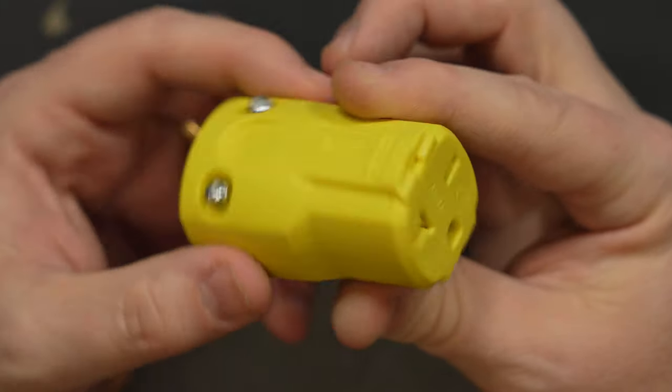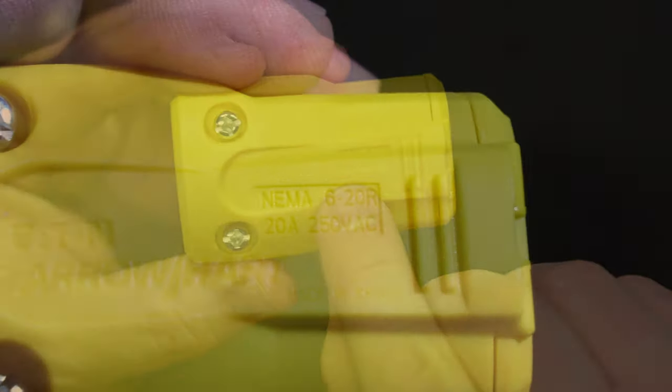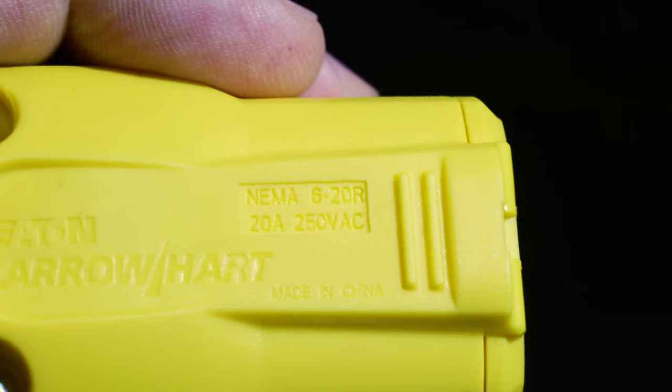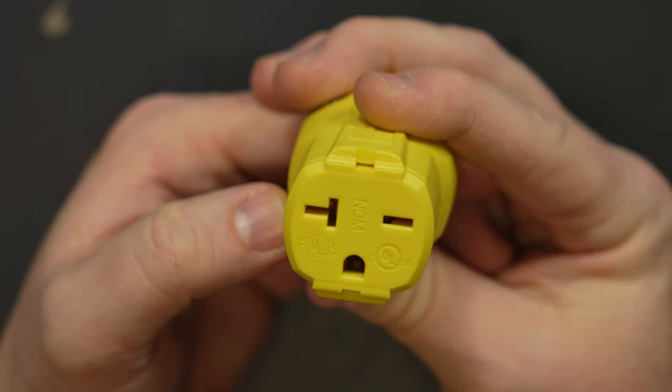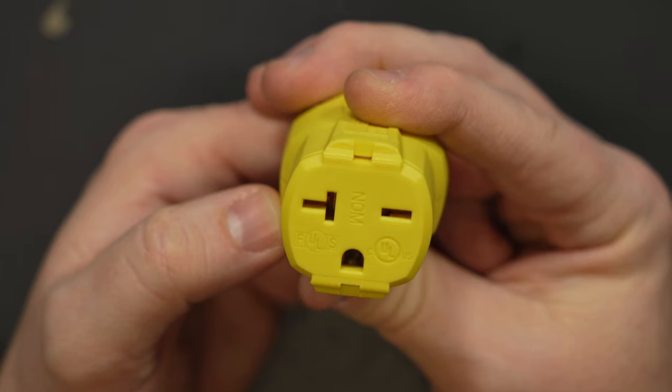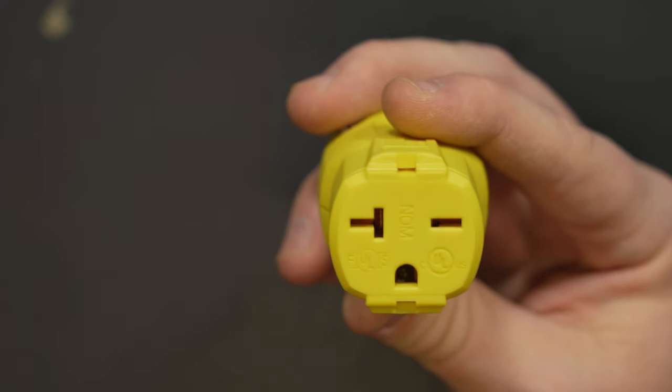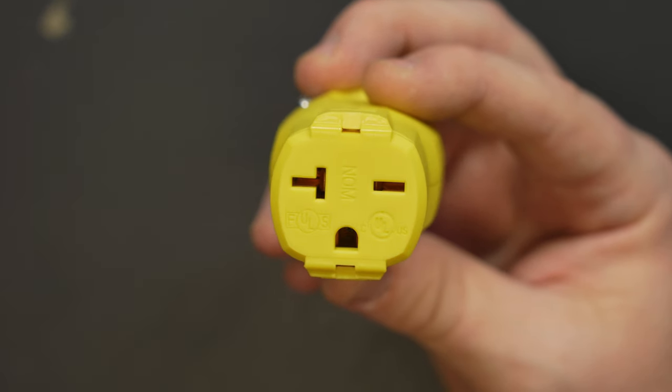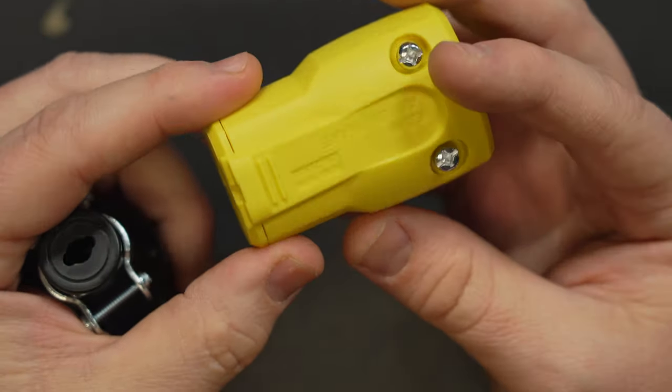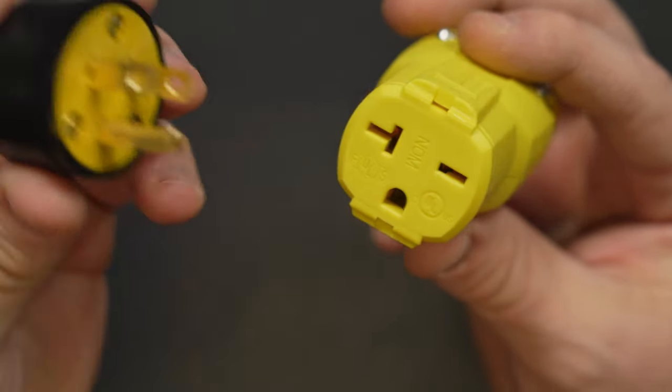For instance this next example is stamped NEMA 6-20 R. This is a completely different configuration on the front, it's not a 5-15. You can see that it looks similar but it is in fact different. This is rated for 20 amps at 250 volts which is commonly used by appliances with a higher current need such as an air conditioner, an oven, or an air compressor, that sort of thing.